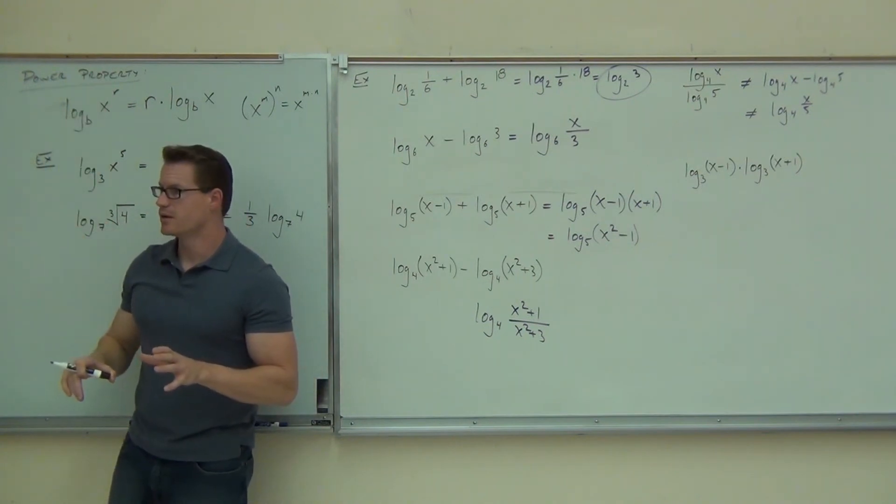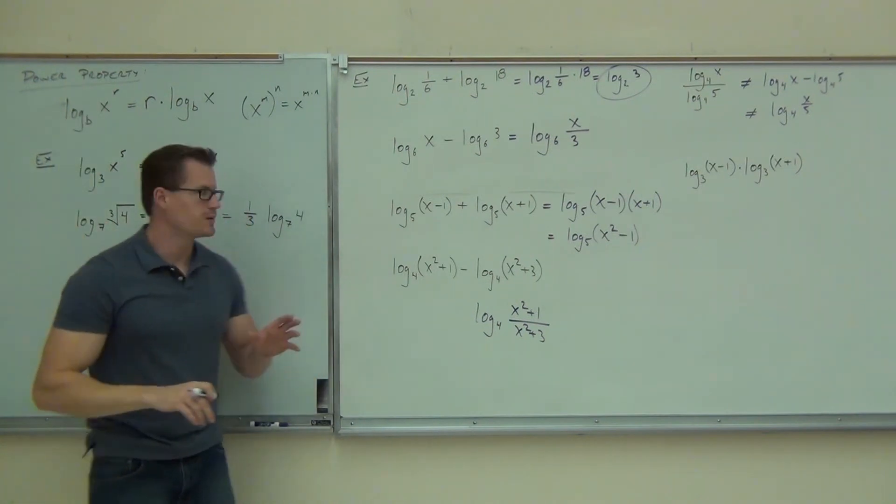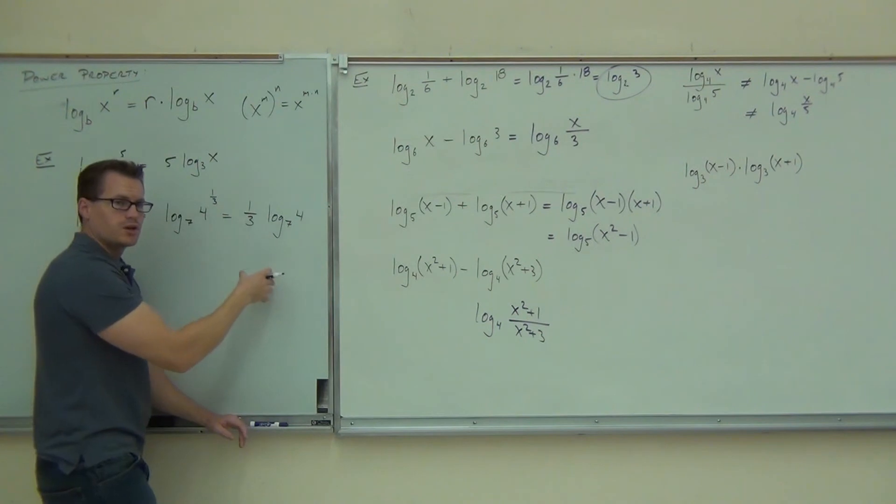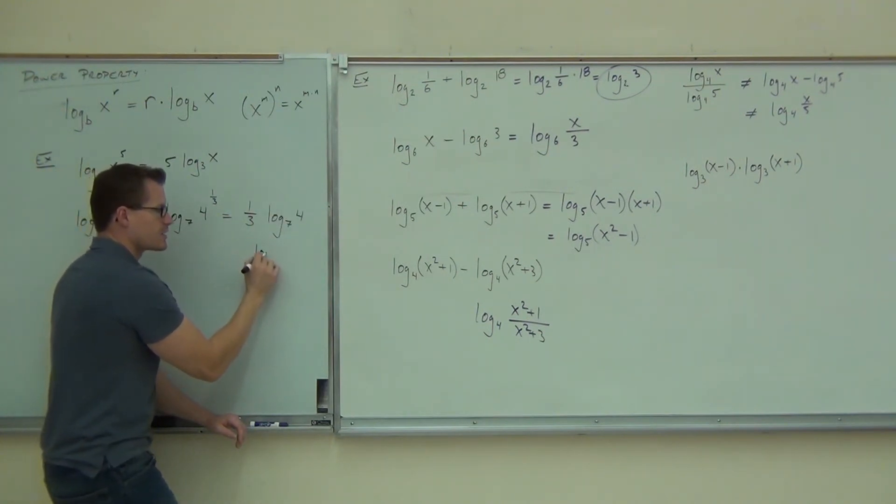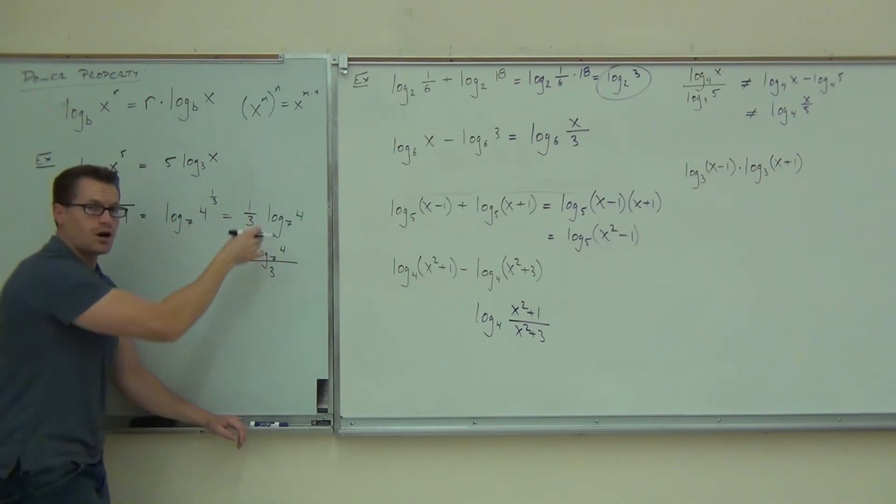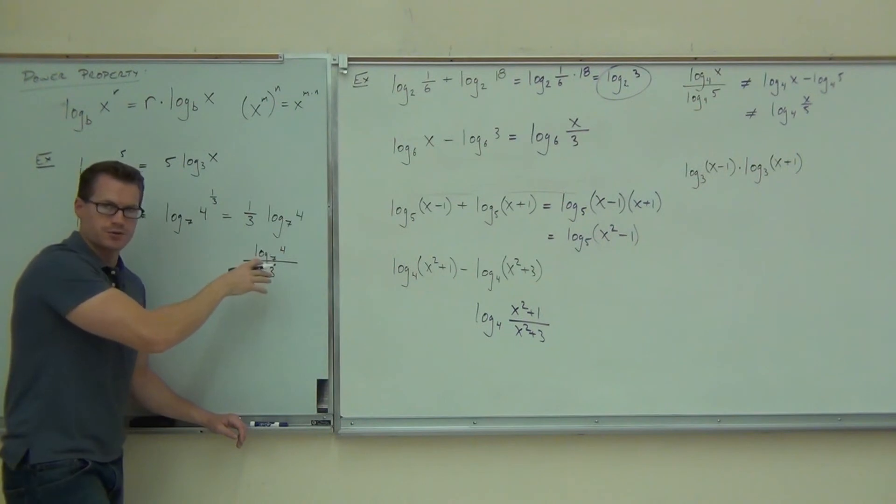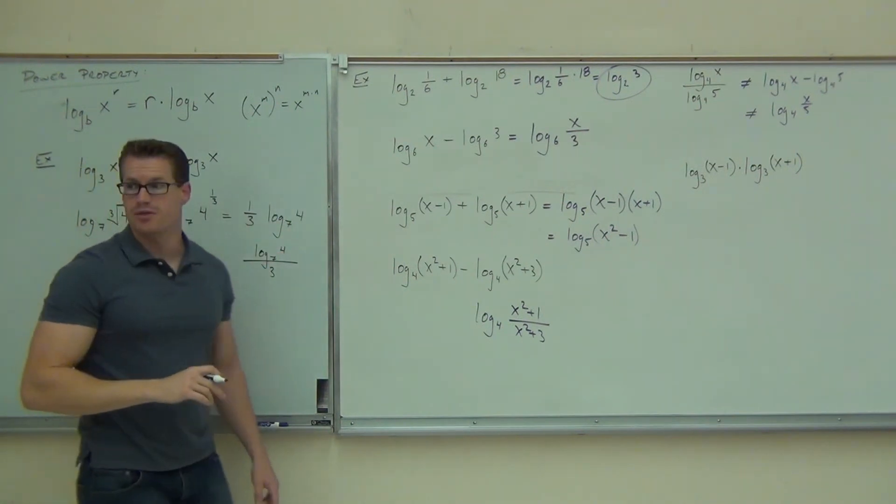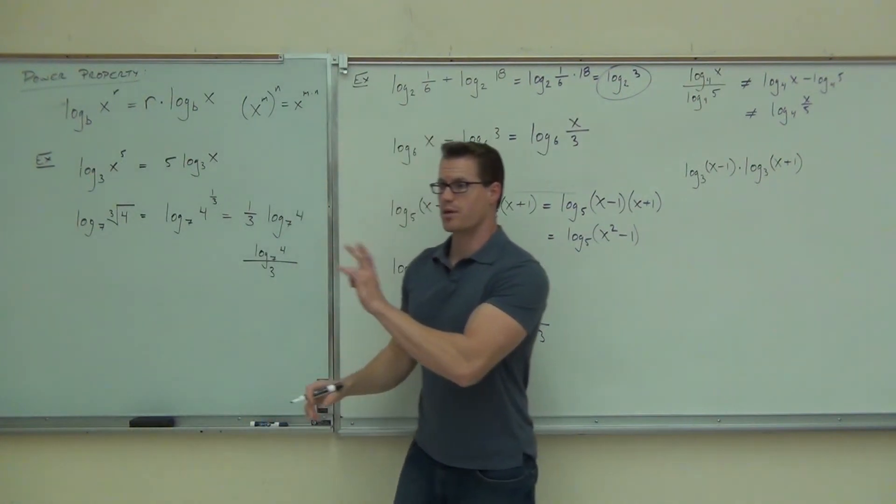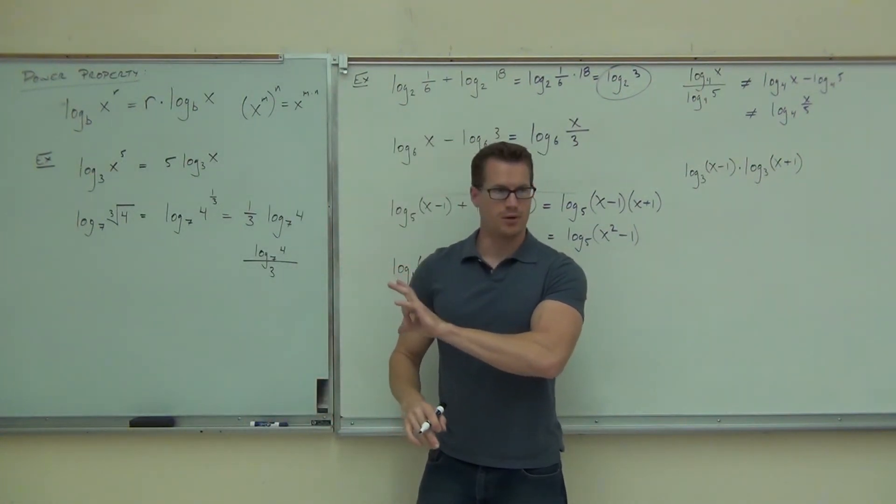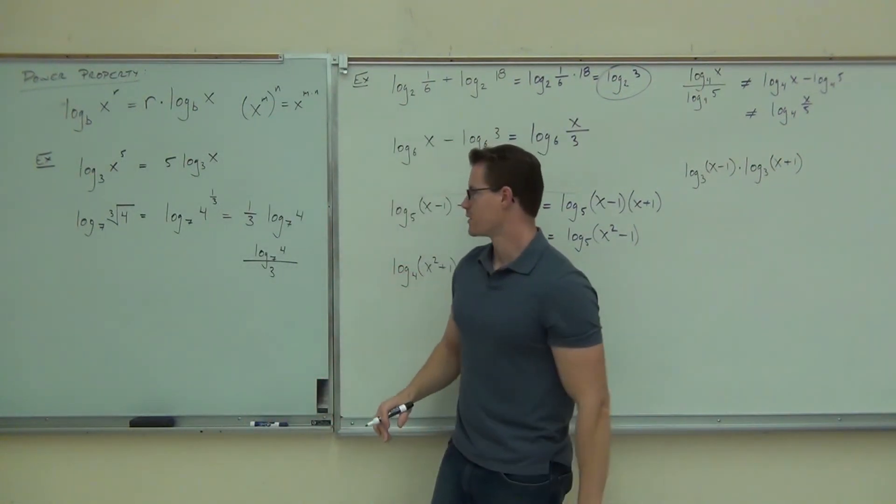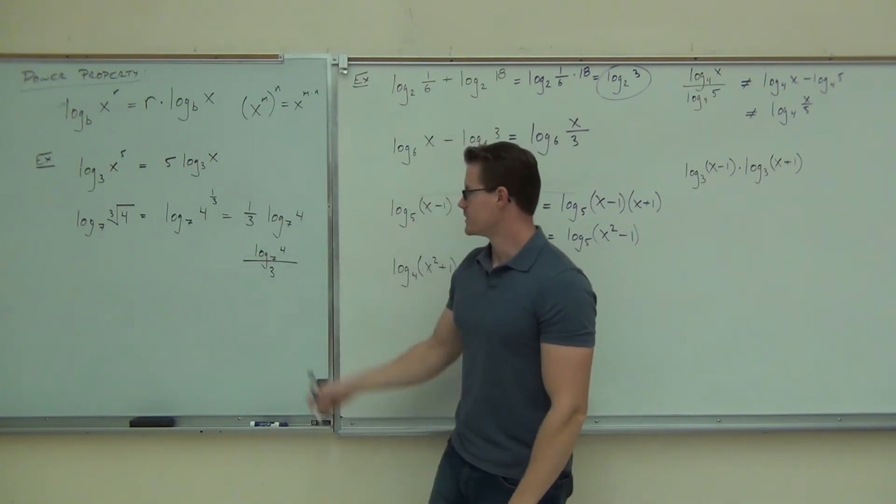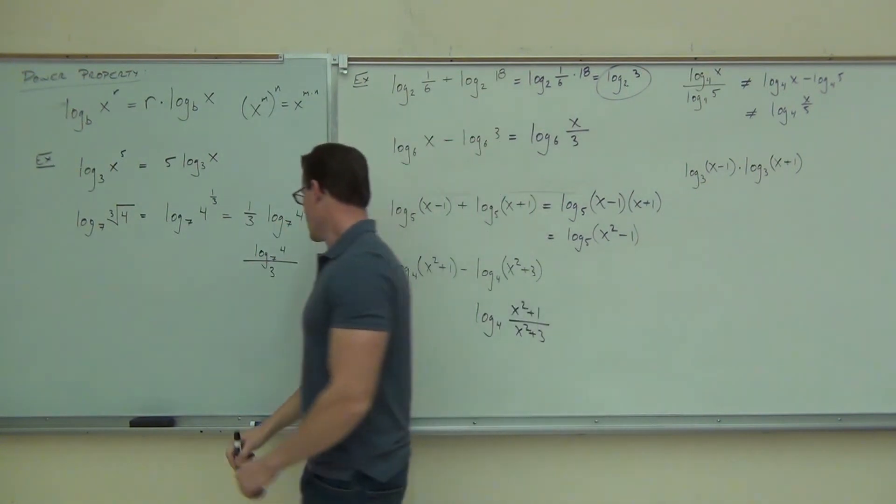Now, there's one more thing. This is kind of interesting here. Hope you don't get confused by this. But you could occasionally write this a little different. Notice how you have 1 third times that expression. That's the same thing as log base 7 of 4 all over 3. Not 4 thirds. Not 4 thirds. You can't just divide the 4 by 3. But the whole logarithm divided by 3, that is appropriate. That is 1 third. Are you okay with that one? It's a little bit of fraction work. Typically, you'll see it written like that. Okay, typically, this one.